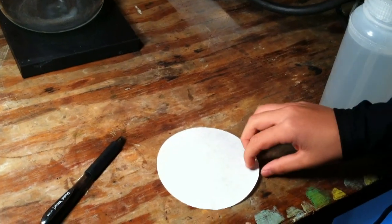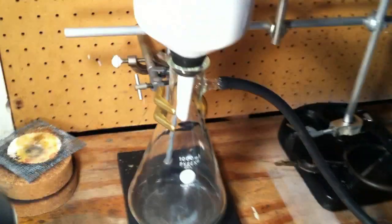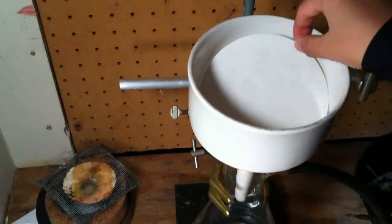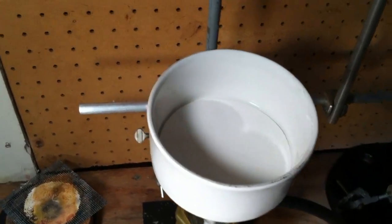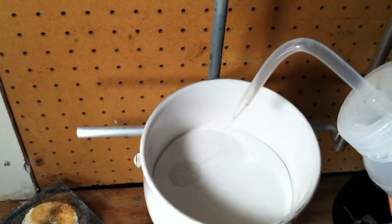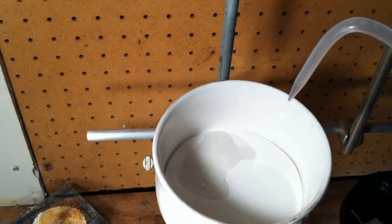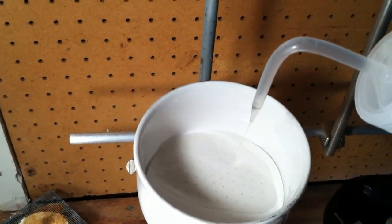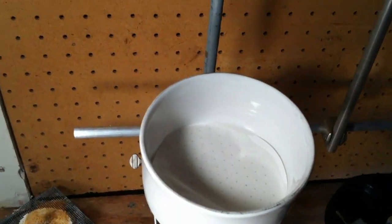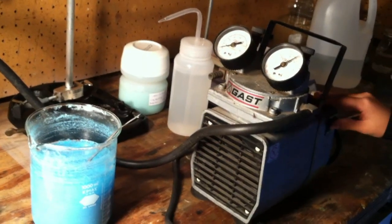Now add the filter paper to the Buchner funnel and squirt some water on it so it can be wet with distilled water. Turn on the vacuum pump.